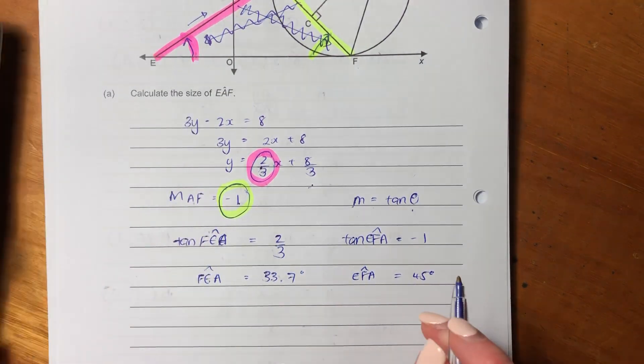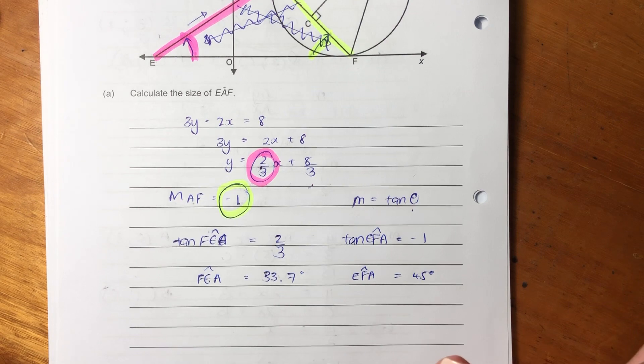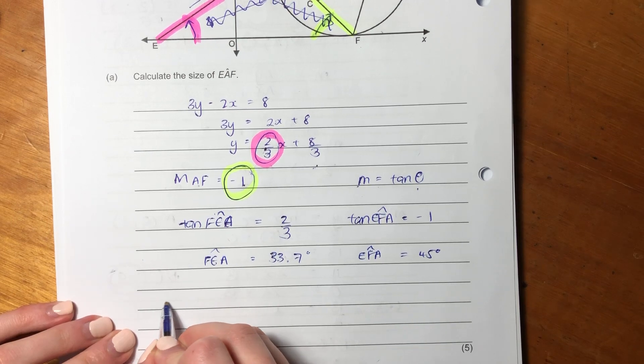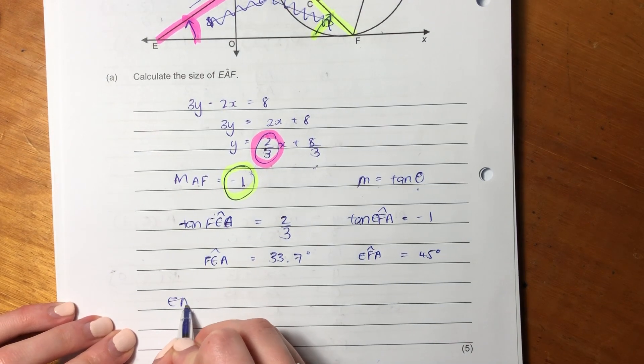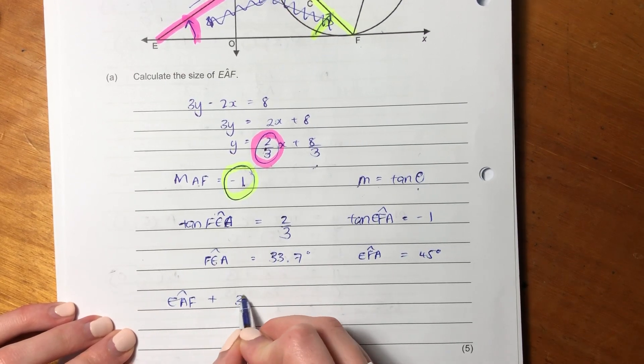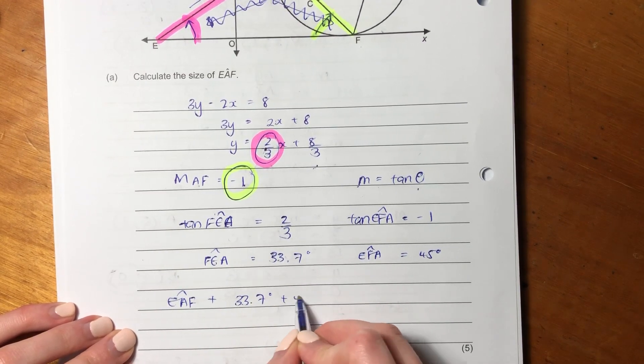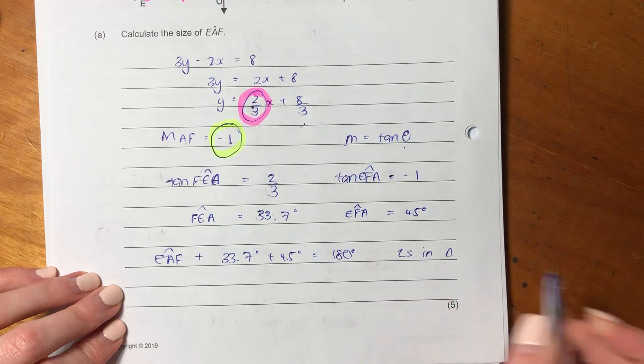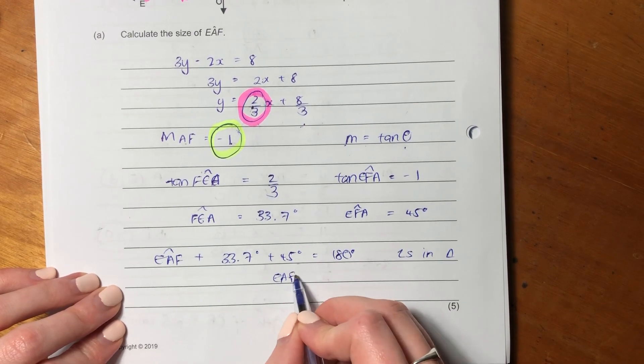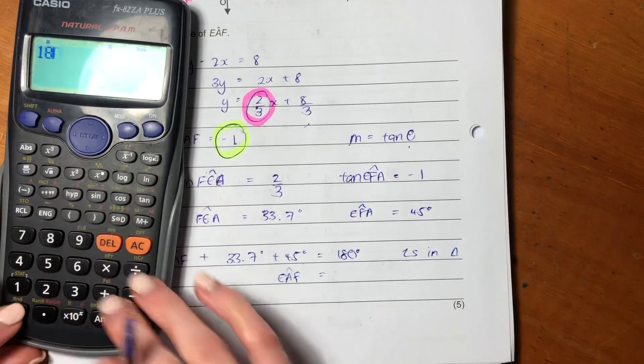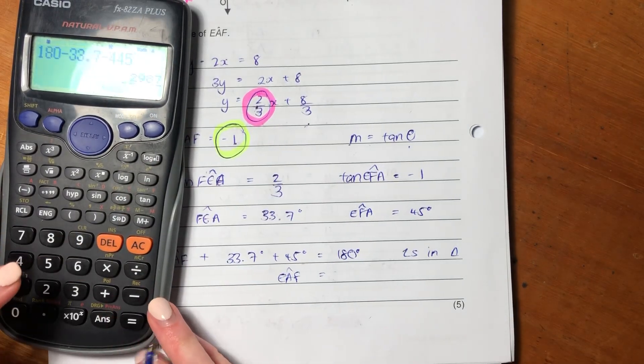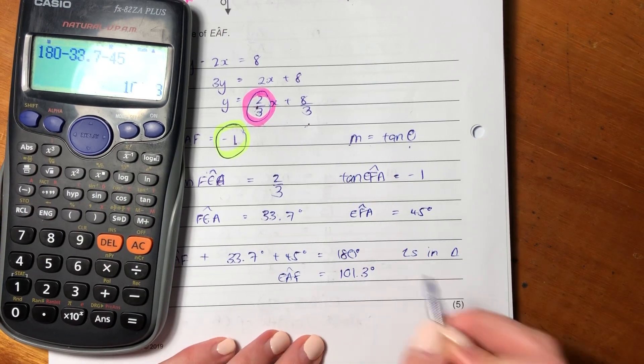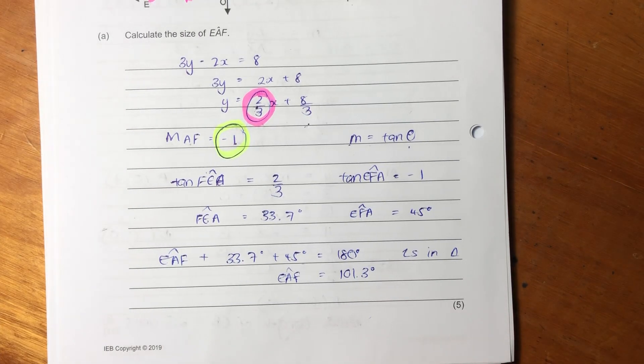Even though it says negative, you can't have negative angles in a triangle, so it's 45. So then angles in a triangle, we say angle EAF + 33.7 + 45 = 180. Because of angles in a triangle, therefore EAF equals 180 - 33.7 - 45. So that is the value of EAF.